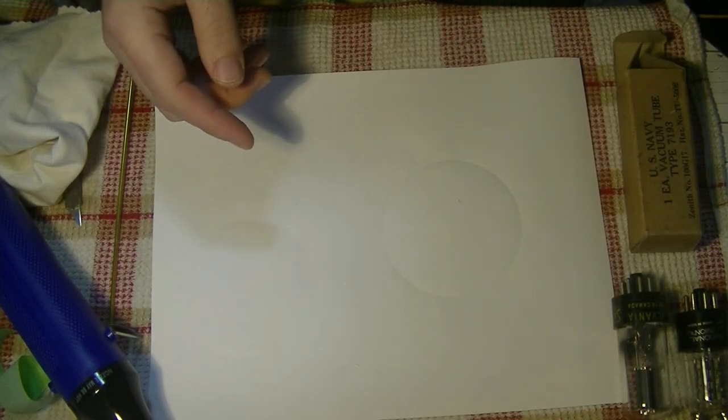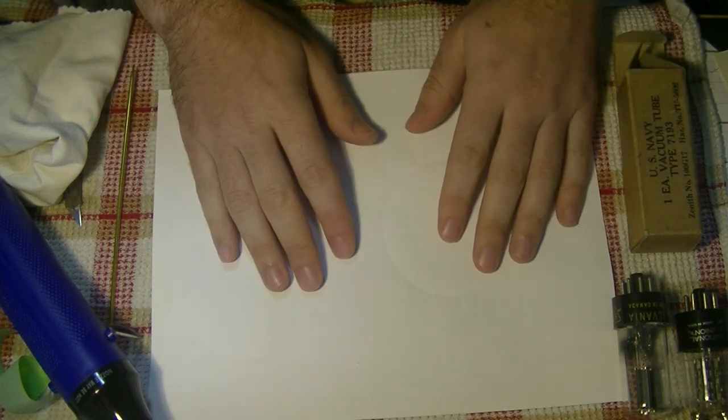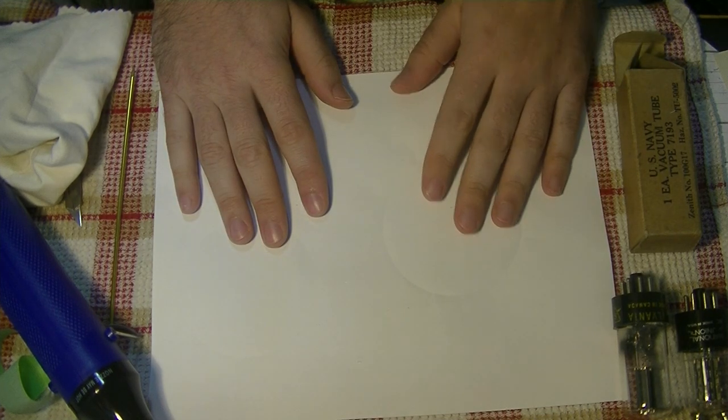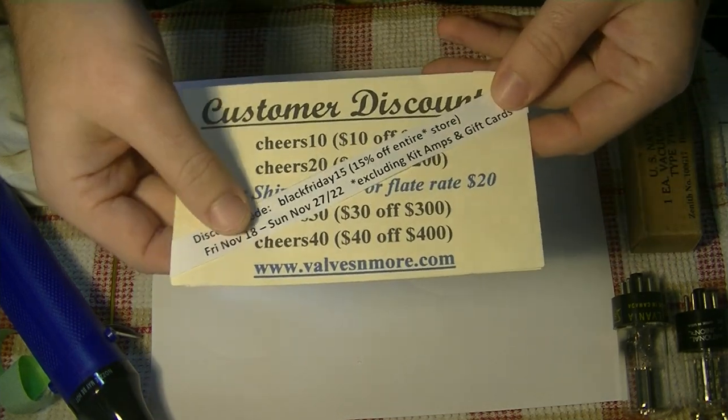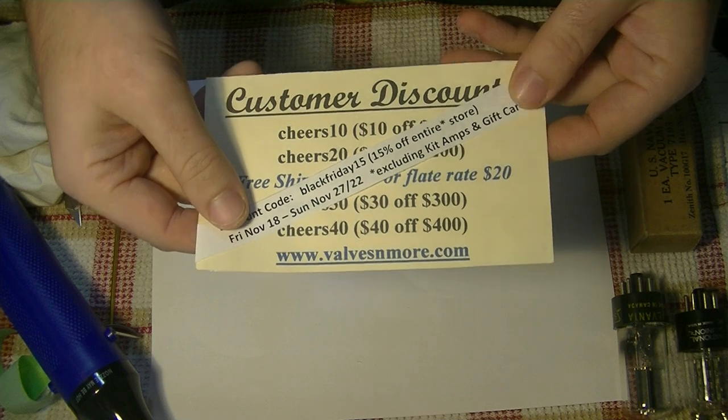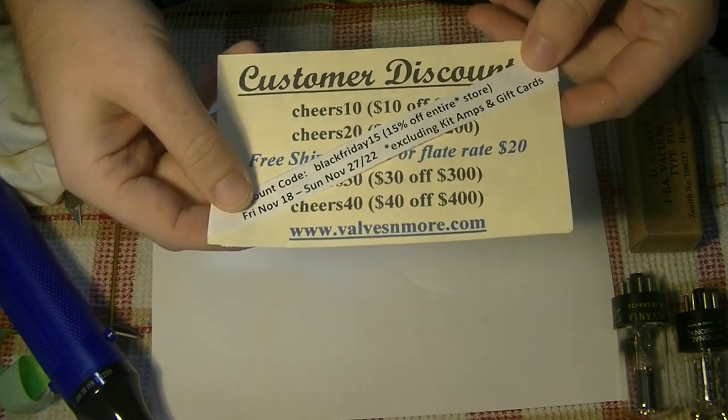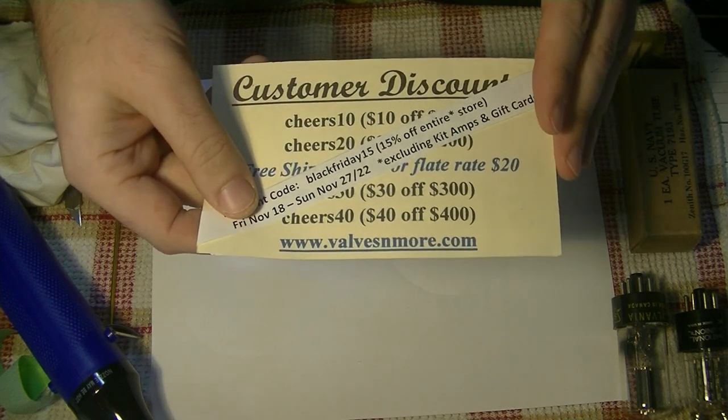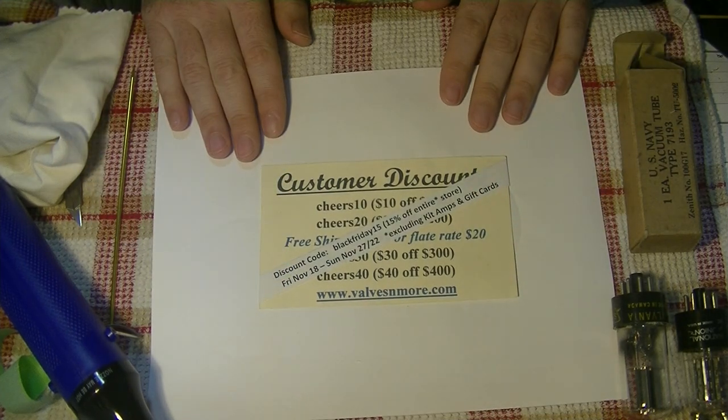In other news, our Black Friday sale has been going strong and have finally slowed down enough for us to get some work done on the kits and to shoot a video like this. Don't forget that the last day of the sale is Sunday, November 27th. Here, let me get the discount card in here. Just use Black Friday 15 at checkout, and that'll get you 15% off everything in the store except for kit amps and the gift cards. And of course, if your order is $150 or more after discount, the shipping is on us, folks. This is Charles from Valves & More signing off. Cheers, everyone!